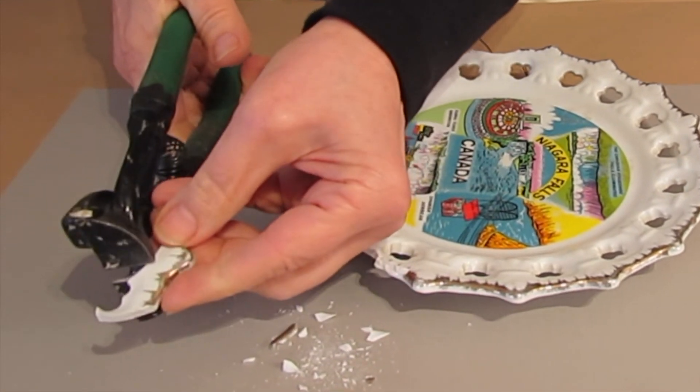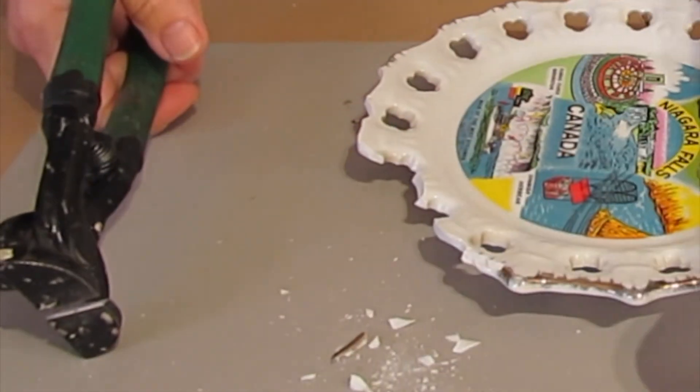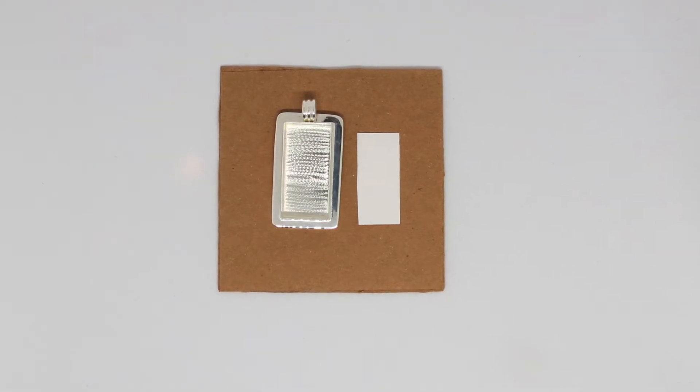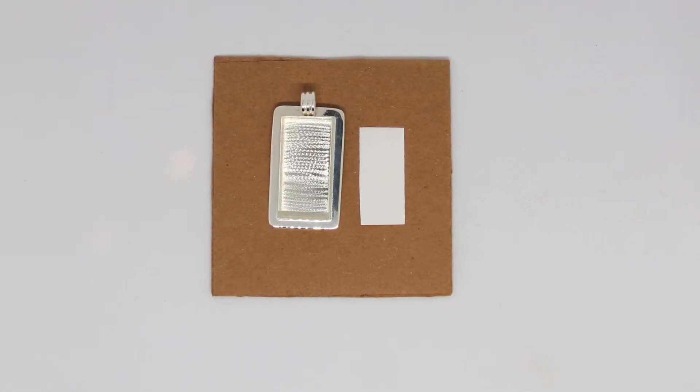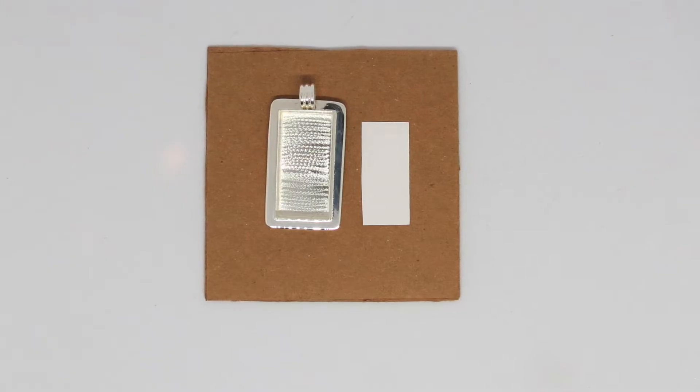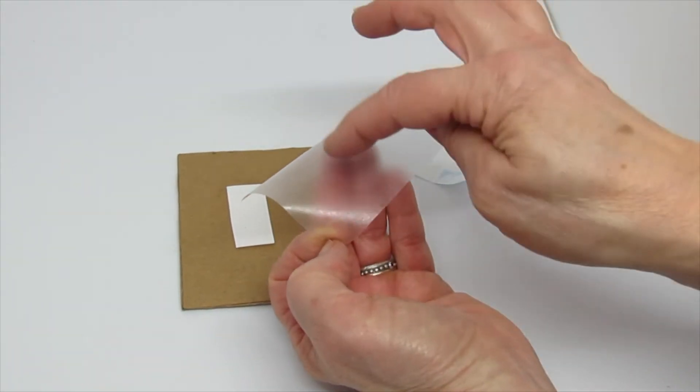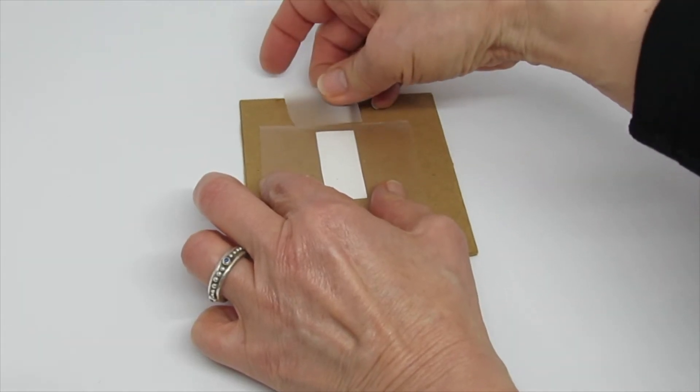Many dishes can be nipped with inexpensive tile nippers. It may be helpful to create a template just a tad smaller than the inside of your jewelry blank. Place the paper under some contact paper or packing tape sticky side up.